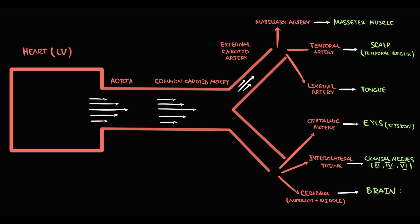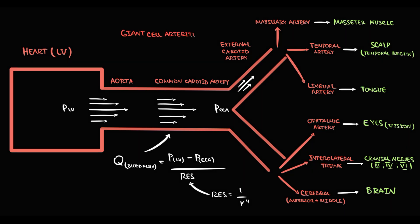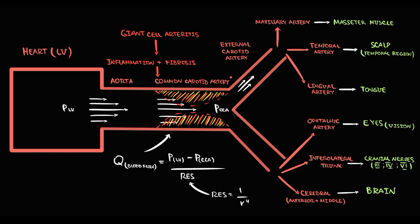From physics, we know that blood flow — for example, from the left ventricle to the common carotid artery — is directly proportional to the pressure difference between them divided by resistance. Resistance is inversely proportional to the fourth power of radius. If giant cell arteritis develops and affects the common carotid artery, vasculitis induces severe inflammation and fibrosis, neointima develops, and the lumen of the artery significantly decreases. With decreasing radius, resistance increases, and with increasing resistance, blood flow decreases.